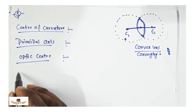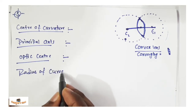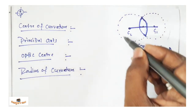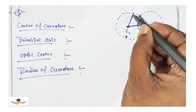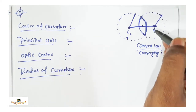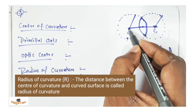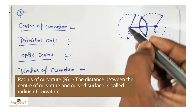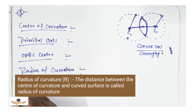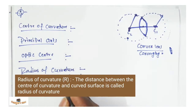What is radius of curvature? If you imagine the curved surface as part of a circle, the distance from the center to the surface is the radius. The distance between the center of curvature and the curved surface is called the radius of curvature.